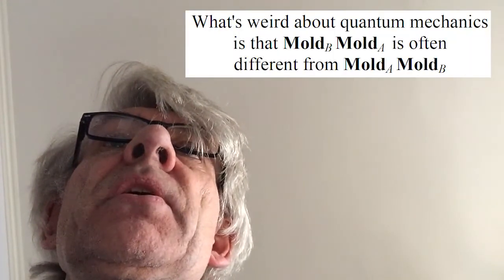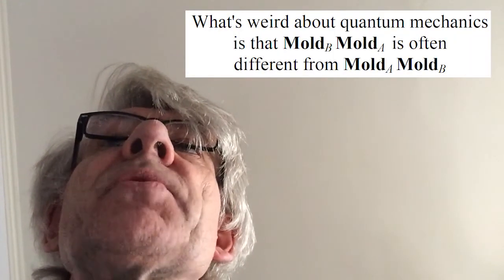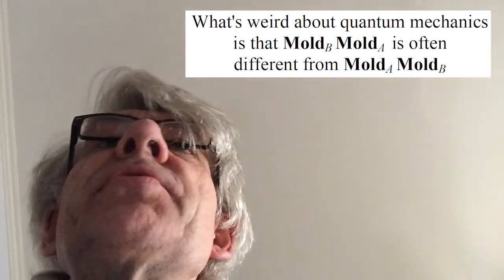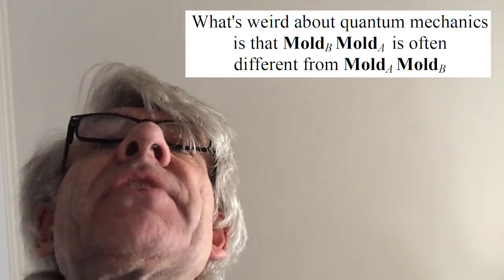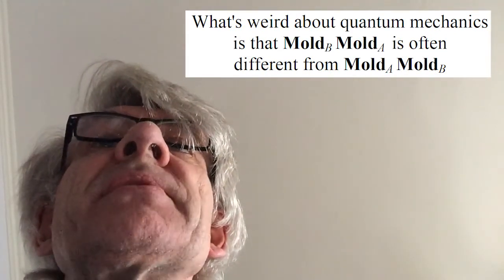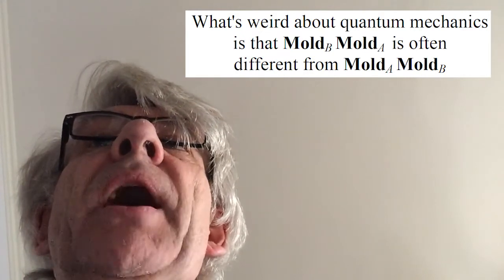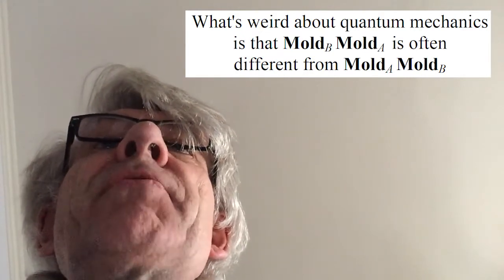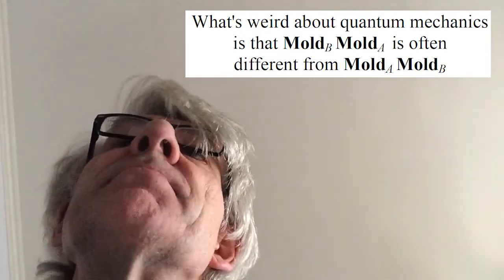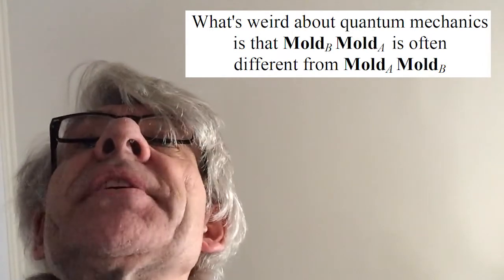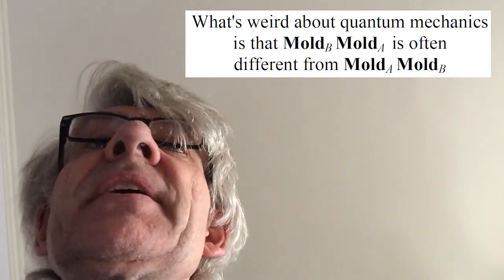Nothing especially weird so far, right? What's weird about quantum mechanics is that changing the order in which we mould messages into the vacuum matters. That doesn't sound like much, but that's every bit of where the weirdness of Heisenberg's uncertainty and Schrödinger's cat is.